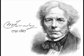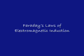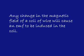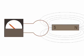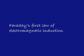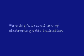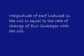Michael Faraday formulated two laws on the basis of these experiments. These laws are called Faraday's Laws of Electromagnetic Induction. The first law states that any change in the magnetic field of a coil of wire will cause an EMF to be induced in the coil. The second law states that the magnitude of EMF induced in the coil is equal to the rate of change of flux linkages with the coil.